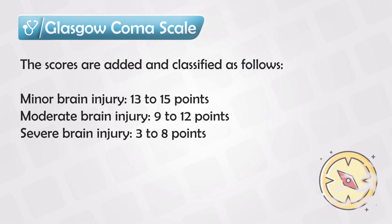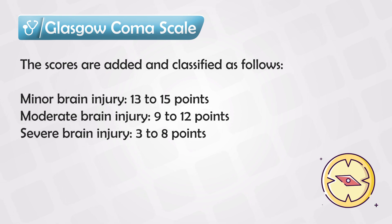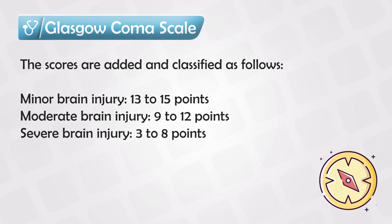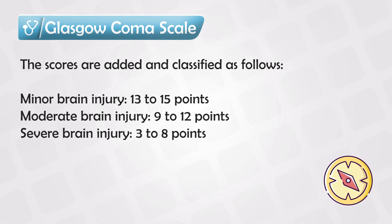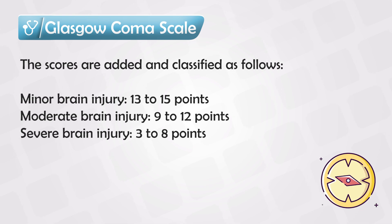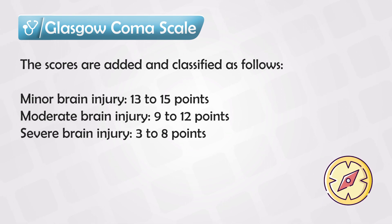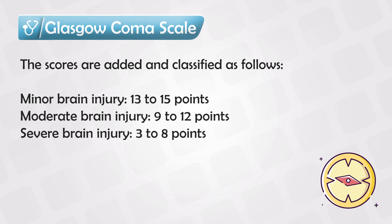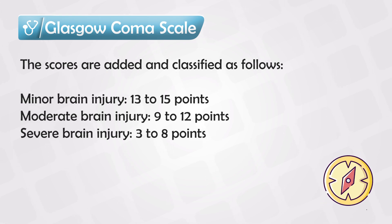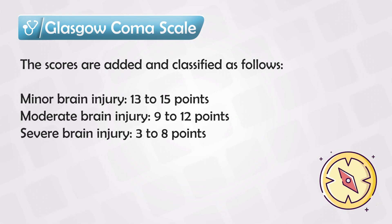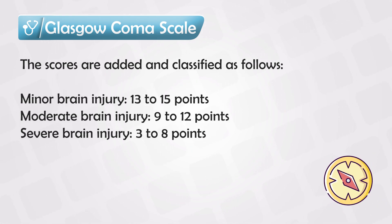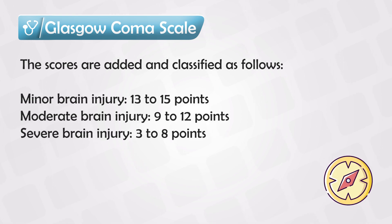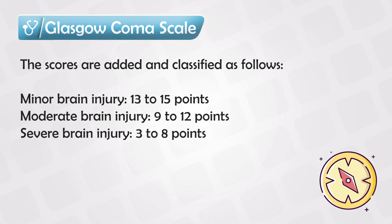You can interpret the results as follows: the patient is likely to have minor brain injury or no injury at all if their score is from 13 to 15, moderate brain injury if the score is 9 to 12, and severe brain injury if the score is 3 to 8. Usually the cutoff point for intubating the patient is 7 or 8.